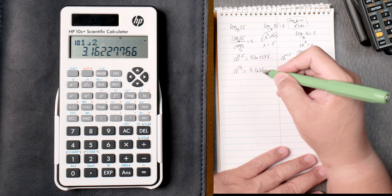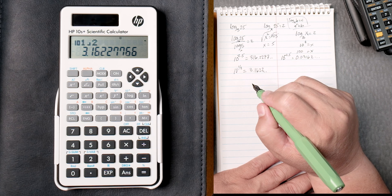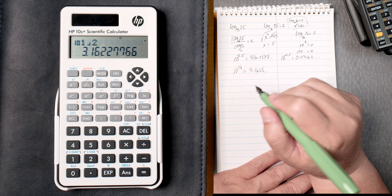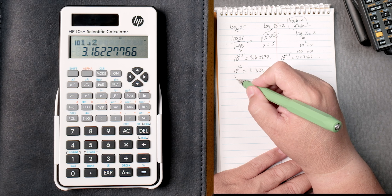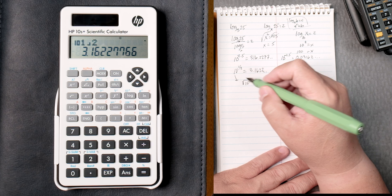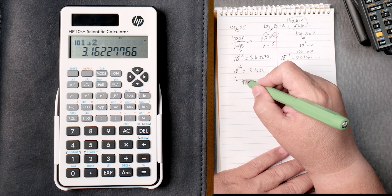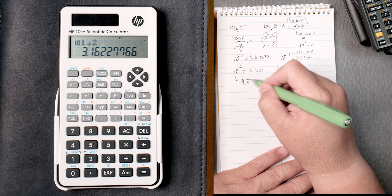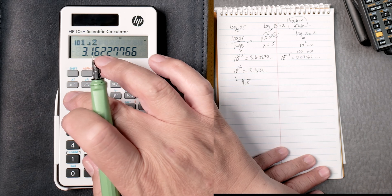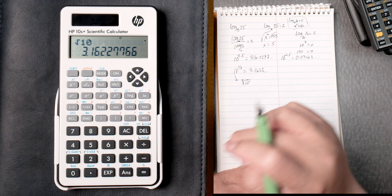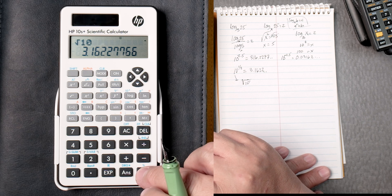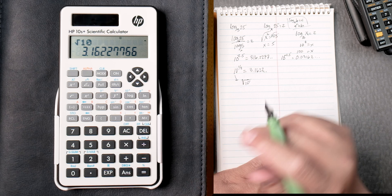3.1622 keeps on going. Looks good. By the way, this is the square root of 10. This 2 is an index. That 1 is right here. So if we took the square root of 10, it gives you the same answer.